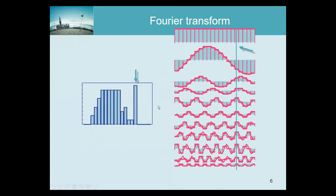The mean is therefore carried only by the zero-frequency component, also called the DC component — a term from electrical engineers working with currents. The next basis function is a sine with one period, adjusted so its peak corresponds to the main peak in the profile. Then we add sines with two periods, three, four, and so on, all the way up to the maximum number of periods we can represent.